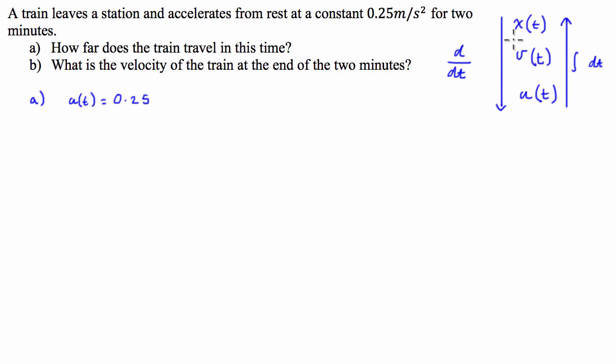So how far does the train travel in this time? We've got to go from a(t) to x(t). So what we're going to do is start by going from a(t) to v(t). So we're going to write the relationship. v(t) is equal to the integral of a(t) with respect to t, which is equal to 0.25t. So you can see that our velocity will be increasing at a rate of 0.25 meters per second every second.